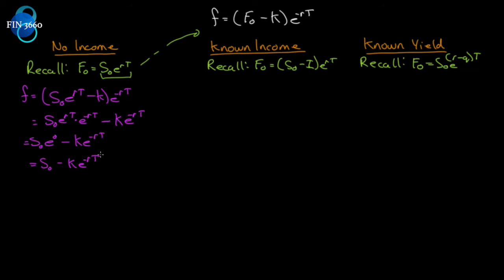We no longer have to calculate a futures price every time we want to find the contract's value. Previously we'd value the futures contract, subtract the original delivery price, then repeat the next day. Now we can express it as a function of the spot price — which we can observe directly — minus the delivery price discounted back to the day we observe that spot price. For example, if the spot price is $50 and our original K is $45...